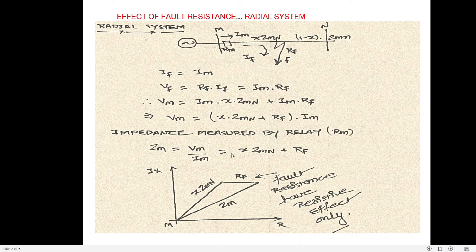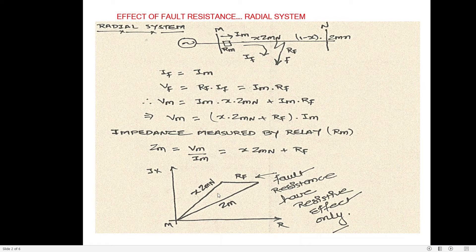X·ZMN is the fraction of impedance up to the fault point. When the effect of RF is not considered, the total impedance measured by the relay is only X·ZMN, and the relay operates correctly. Any characteristic — circular, plain impedance, or offset mho — works in that case. But once the effect of RF is introduced, the impedance measured by the relay increases depending on the magnitude of the fault resistance.